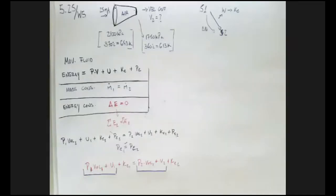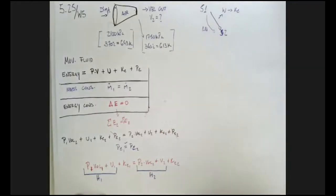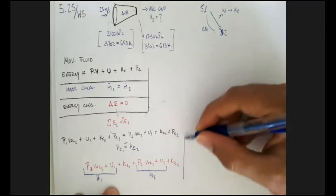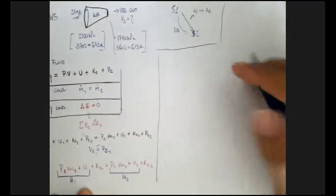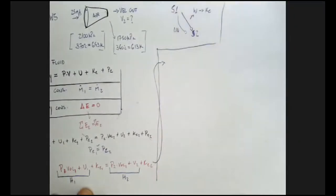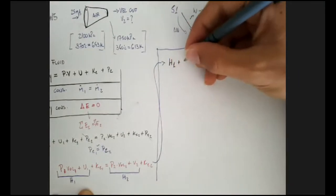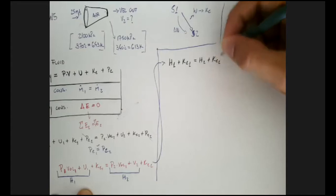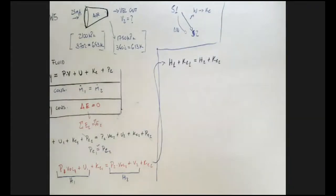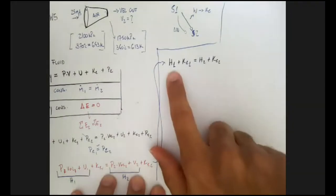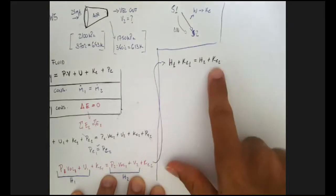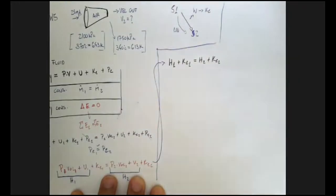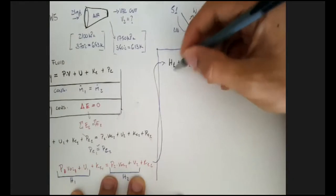Pressure times volume plus internal energy equals enthalpy — that's the definition of enthalpy. So by definition of enthalpy we can rewrite those terms. The whole equation becomes: H1 + KE1 = H2 + KE2. As long as we have the enthalpy values for both states and the kinetic energy at state one, we can find the kinetic energy at state two, and from that the velocity.